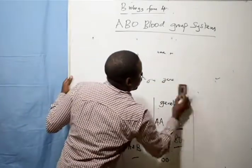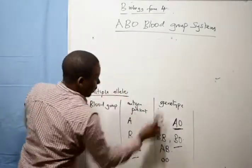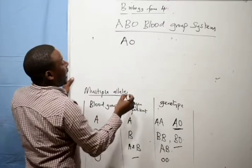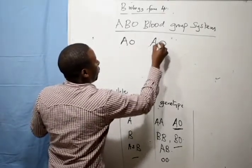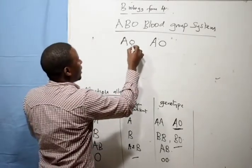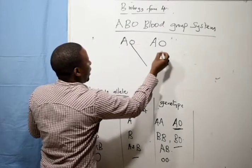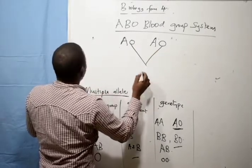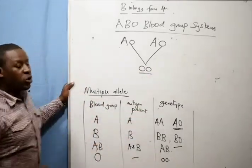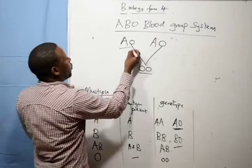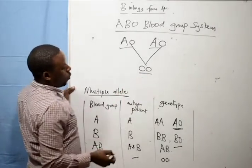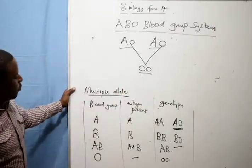We can demonstrate this easily: if a female has blood group A with genotype AO, and a male has blood group A with genotype AO, when these two reproduce, the gametes carrying gene O from each parent can meet and produce a child with blood group O. So it is possible for two individuals with blood group A to have a child with blood group O.